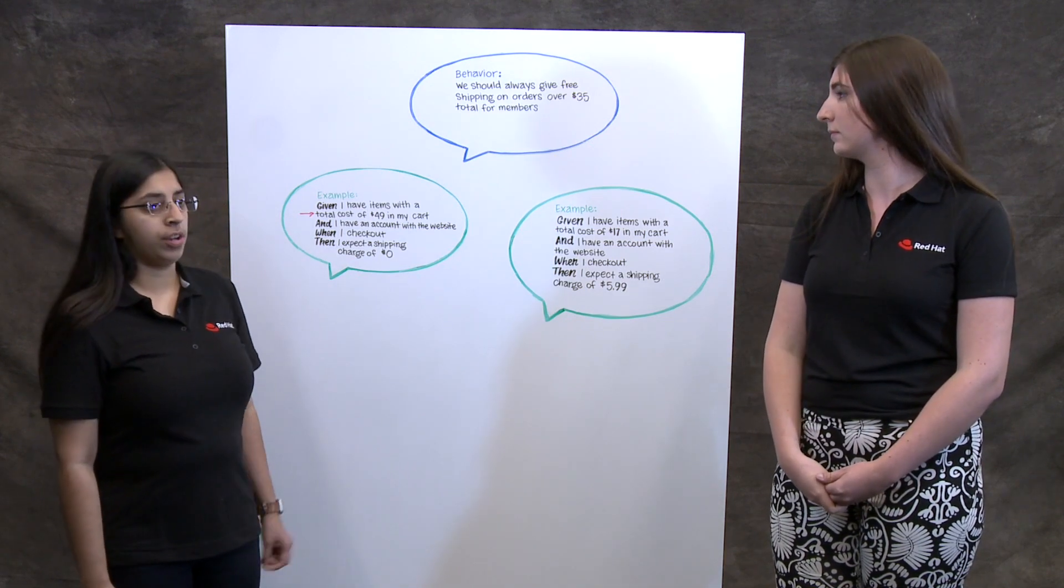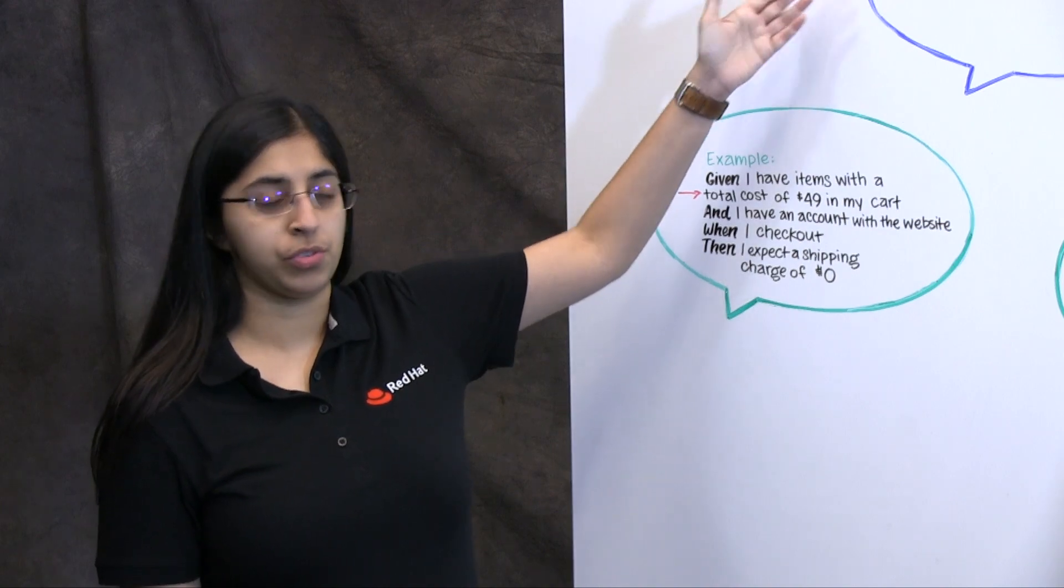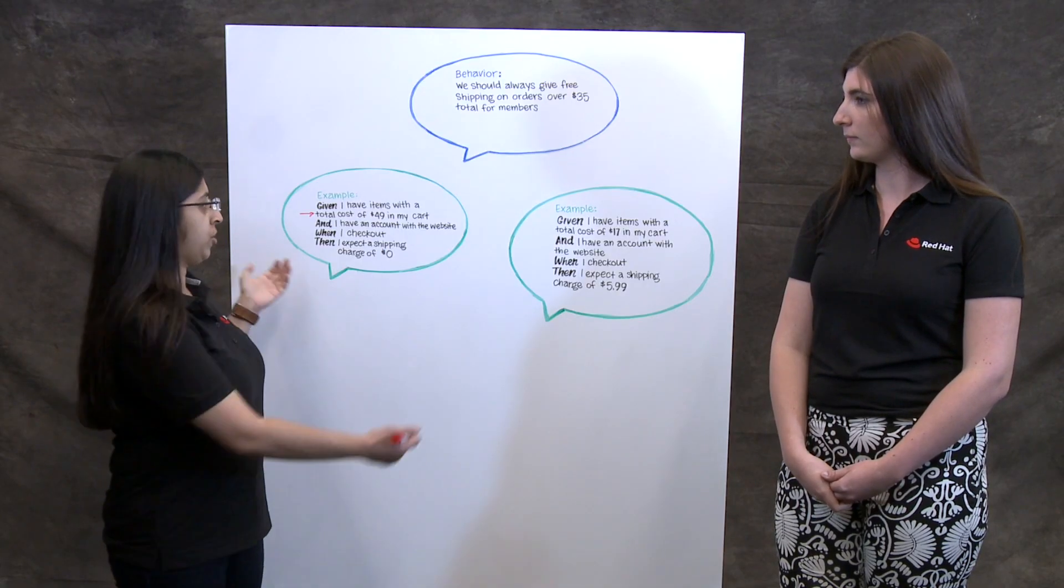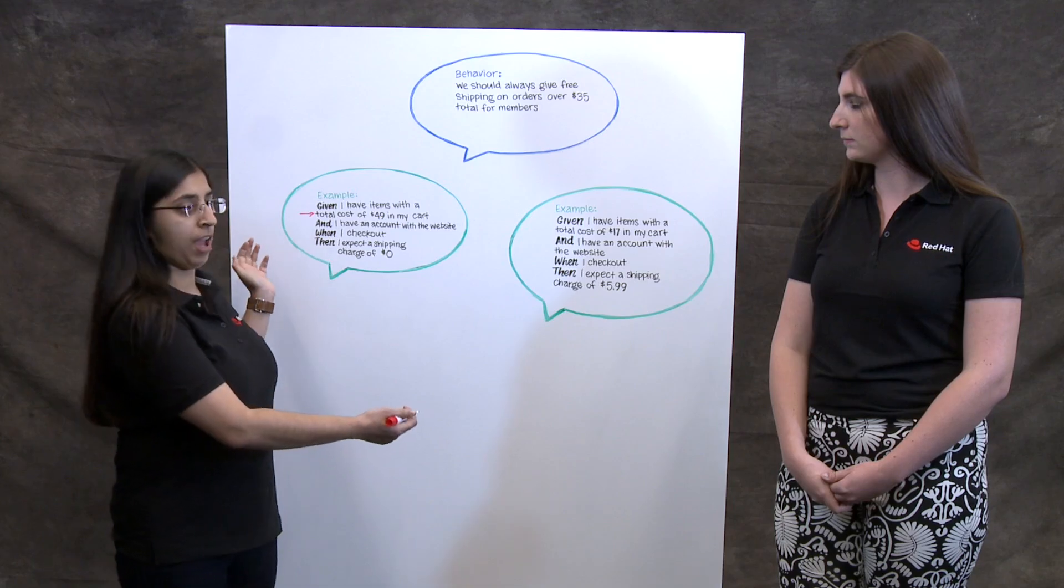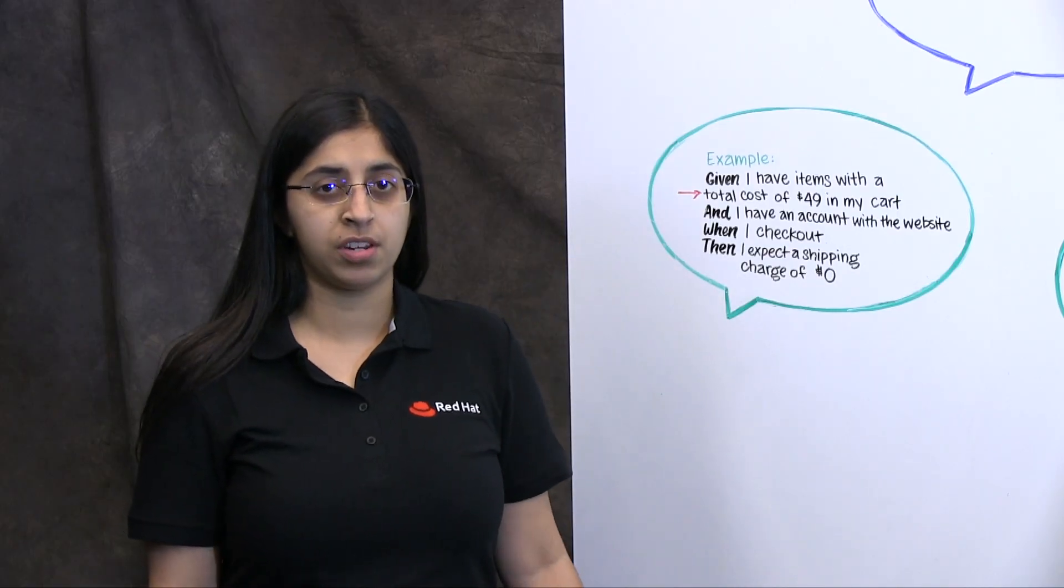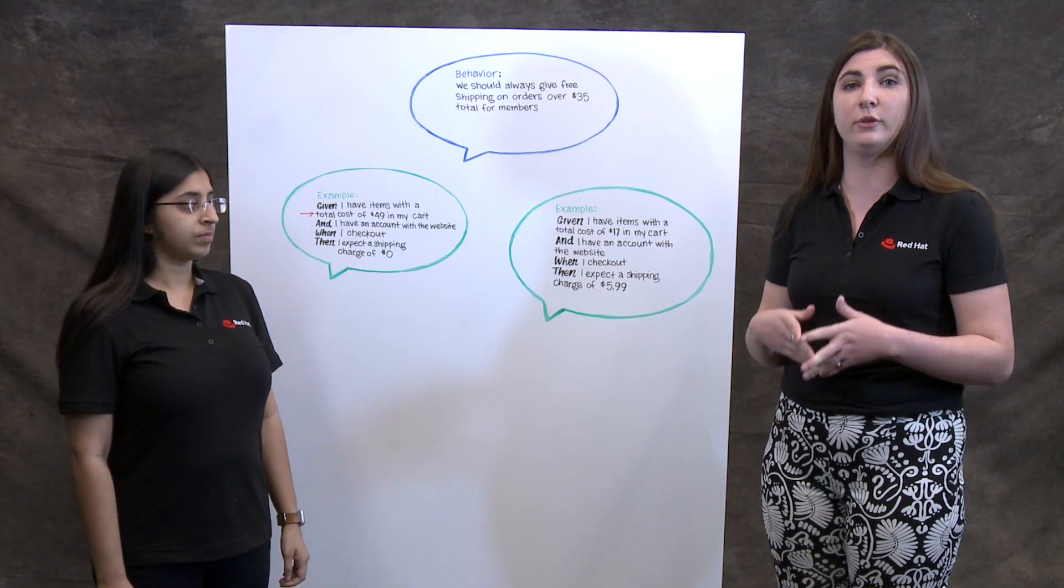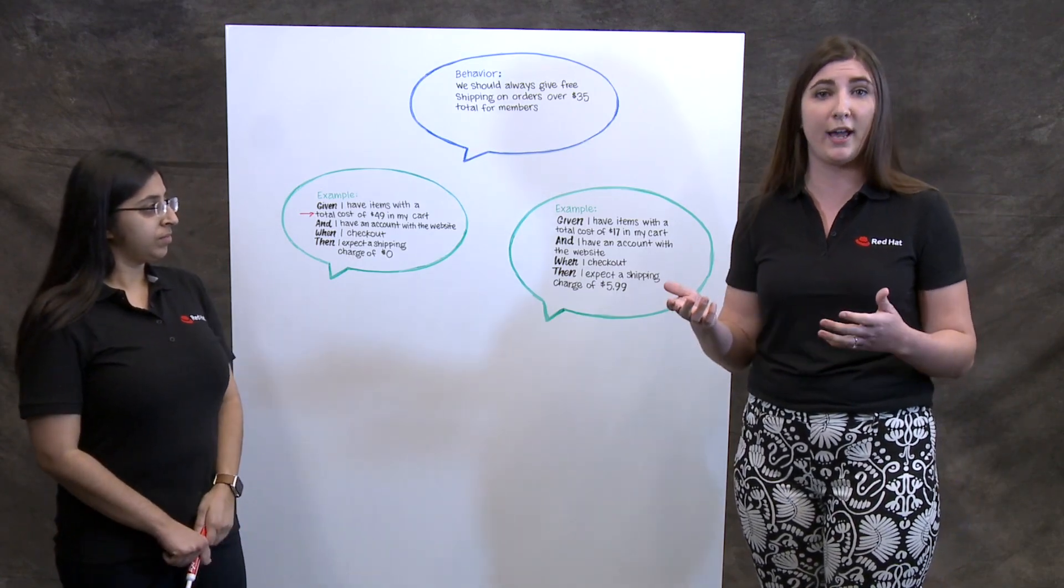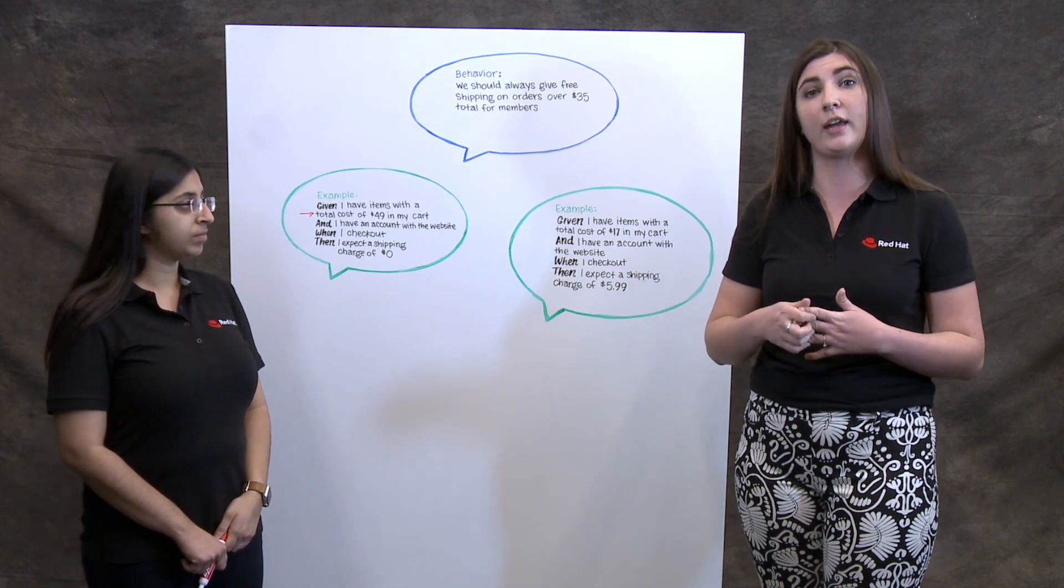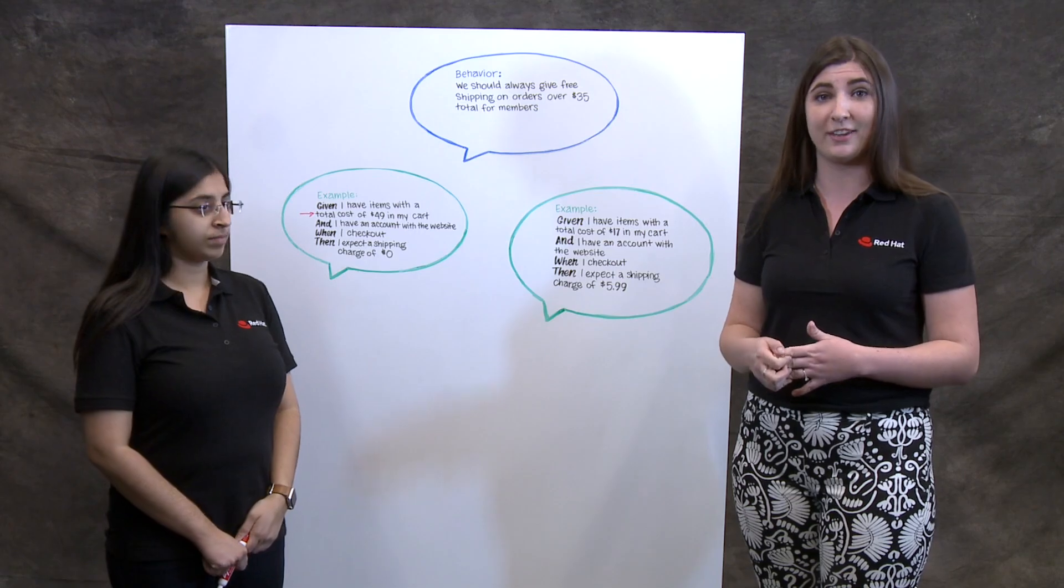That's great. So step one is to define very specific behaviors that we expect our system to produce. Step two is to illustrate this using multiple examples of what that behavior actually is. And step three is to create a shared language amongst a team of what all the words in these examples mean. Exactly. And if you need help implementing these steps by Red Hat, you can go to your existing account executive or go to redhat.com/services to learn more. Thank you.